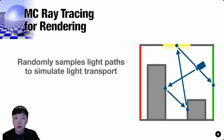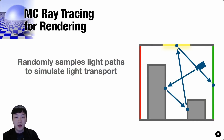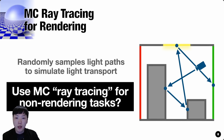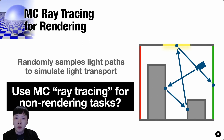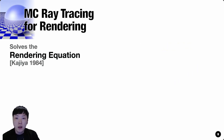Let us first do a quick review of MC ray tracing. MC ray tracing randomly samples light paths to simulate the phenomena of light transport, and it has a long history of development. The problem we try to answer in our paper is whether we can utilize MC ray tracing for something other than rendering. To think about this problem, let's take a look at its theory. We can say MC ray tracing is a numerical algorithm that solves the rendering equation.